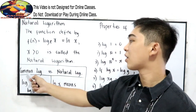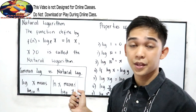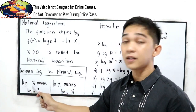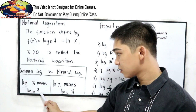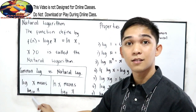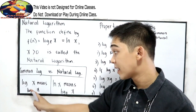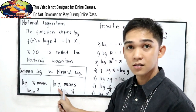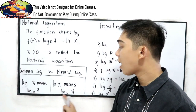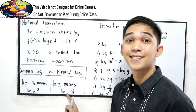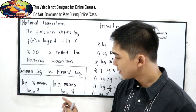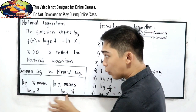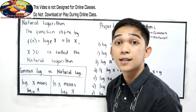Now we have common logarithm versus natural logarithm. In common logarithm, log x means log x base 10 — so the base is understood to be 10. While in natural logarithm, ln x means log x base e. The difference is: in natural logarithm we have base e, while in common logarithm we have base 10.